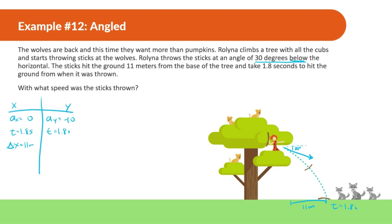With three pieces of information in the x direction, we can find the velocity in x. Since acceleration is zero in x, we only have one formula: VX equals displacement X divided by time. So VX equals 11 meters divided by 1.8, which gives us 6.11 meters per second. But that is just the velocity in the x direction — not the final answer.